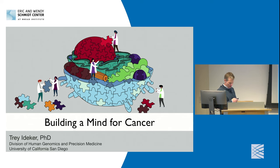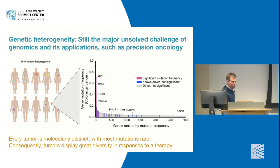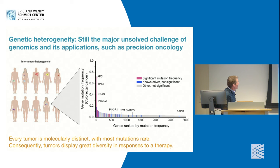So, building a mind for cancer. The premise or point of departure for this talk is a common one, I think, for a lot of people's talks, including at the Broad. It really revolves around this long-standing struggle to understand genetic heterogeneity in diseases like cancer — still one of the major unsolved challenges of genomics and its applications to precision medicine and oncology.